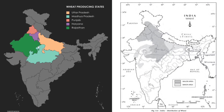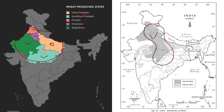Next is wheat producing states. The major five states are Uttar Pradesh, Madhya Pradesh, Punjab, Haryana and Rajasthan — all adjacently placed on the map. Uttar Pradesh will be the most perfect example as a leading producer in wheat production. Major areas include Western U.P., Punjab, Haryana and northern Madhya Pradesh. In minor areas we can see Eastern U.P. and Northern Bihar.